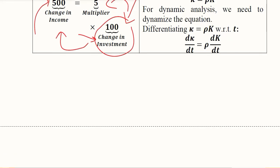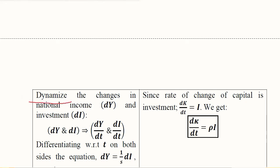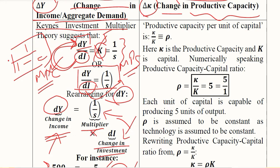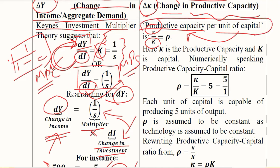We can further look into the process of dynamization of these expressions, since we are talking about a dynamic analysis. We can introduce the time variable on both sides. But before doing that, let us develop the supply side as well. The supply side is defined by the productive capacity. We observe the productive capacity per unit of capital — that is, how much each unit of capital is capable of producing. This means productive capacity κ divided by capital K is a ratio that tells us about the productivity or ability of each unit of capital.